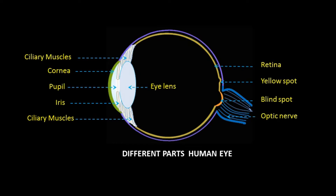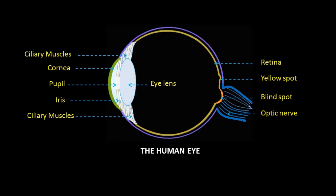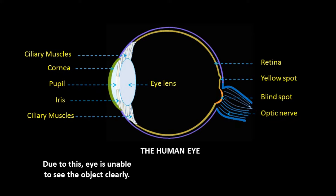These are the different parts of the human eye. The human eye loses its power of accommodation, due to which the eye is unable to see objects clearly. What is meant by power of accommodation? The ability of the human eye to adjust its focal length to form a sharp and clear image of an object at different positions from the eye, with the help of ciliary muscles, is called the power of accommodation. Different defects of vision are then formed in the human eye.